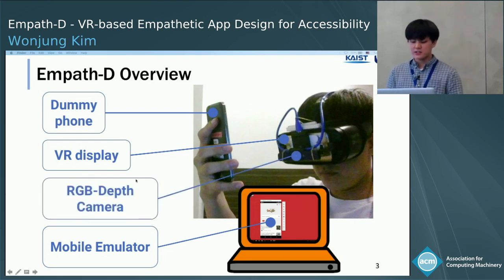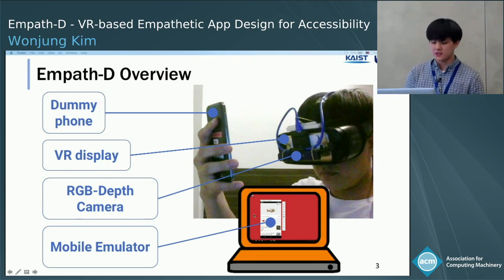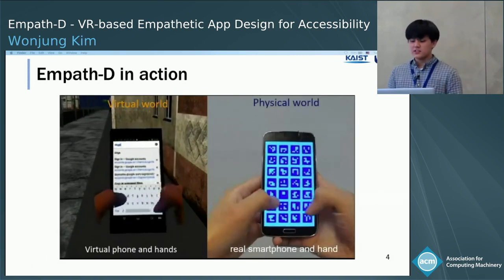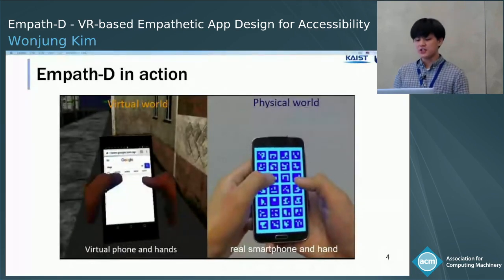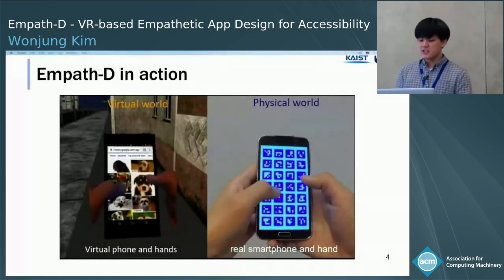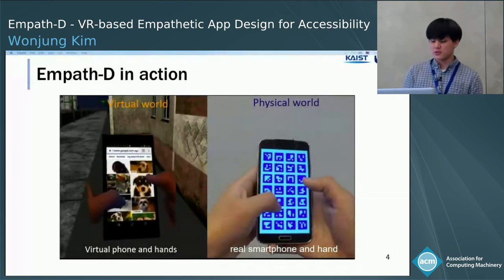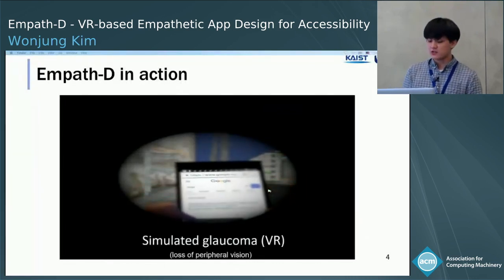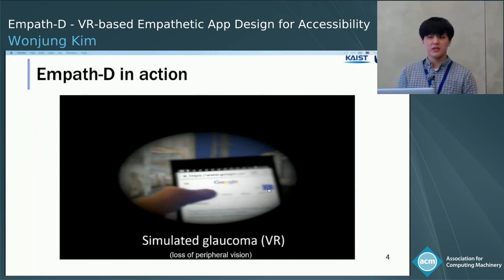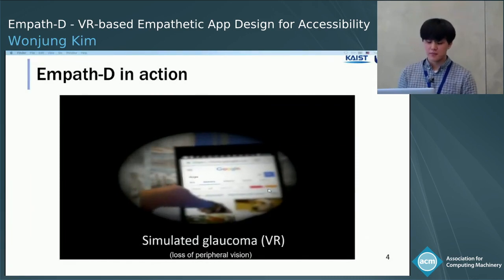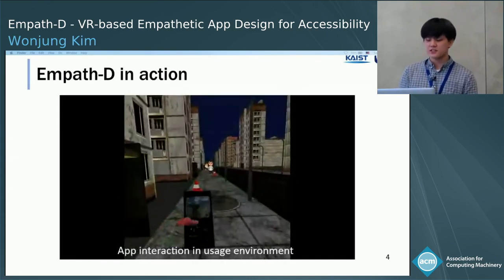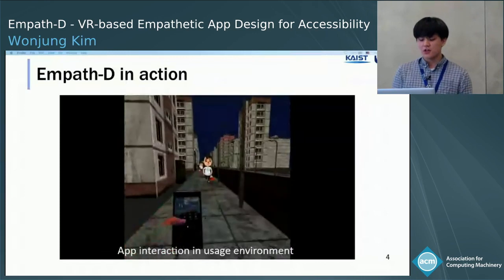The system also tracks hands and phone using an RGB depth camera, and after tracking, the system renders them in the virtual world. The user clicks the physical phone, as shown on the right side, while seeing the app's response through the virtual phone on the left side. The system applies the image effect vignette to simulate glaucoma, which presents loss of peripheral vision. MFSD is also able to simulate application usage environments such as a crowded street, and it also allows navigation inside VR.